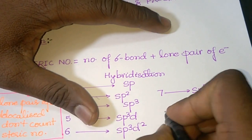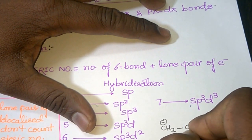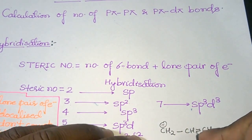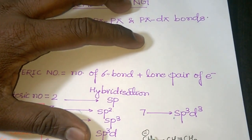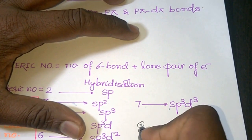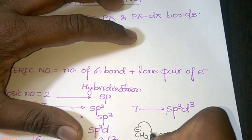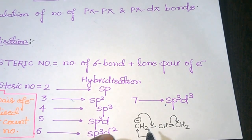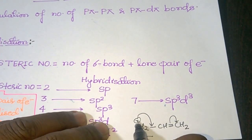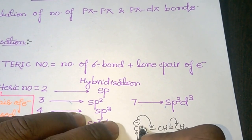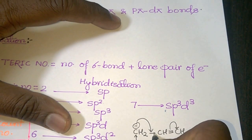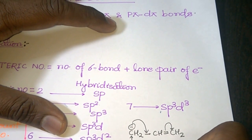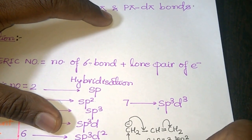For example, if you are asked to find the hybridization of this carbon atom where we can clearly see that the lone pair — the negative charge on the carbon atom — is delocalized and resonance is taking place. So for the calculation of hybridization of this carbon, we don't consider this negative charge in the steric number. The steric number is 3 sigma bonds plus 0 lone pairs, equal to 3, and this carbon is sp2 hybridized.